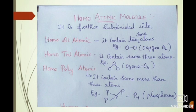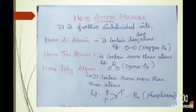Homo-triatomic molecule means it contains three atoms — for example, ozone O3, which contains three O atoms. Homo-polyatomic molecule means it contains more than three same atoms — for example, phosphorus P4, which contains four phosphorus atoms.